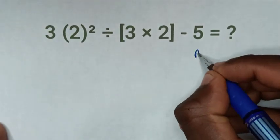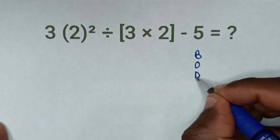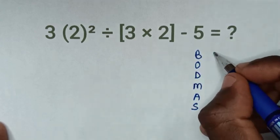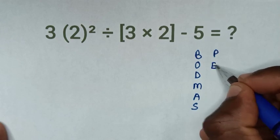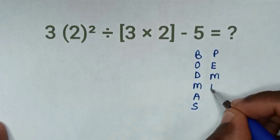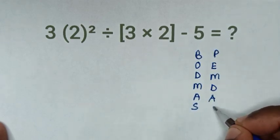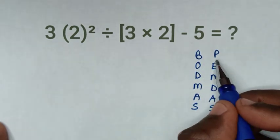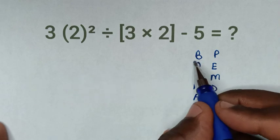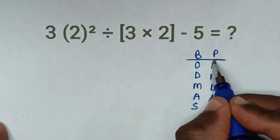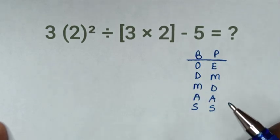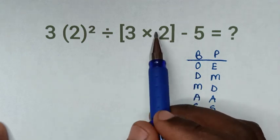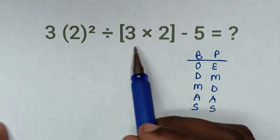From BODMAS or PEMDAS, B is bracket and P is parenthesis, which are the same thing. So we'll start to deal with bracket or parenthesis — in here we'll have this squared bracket.